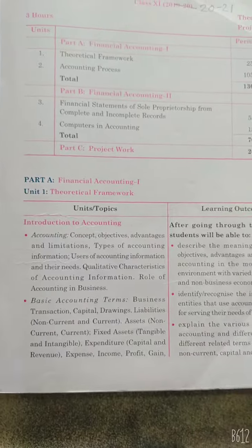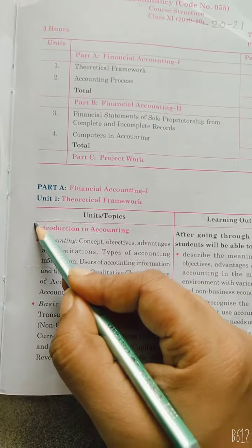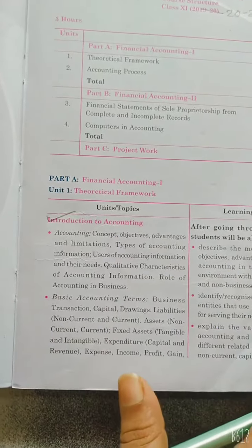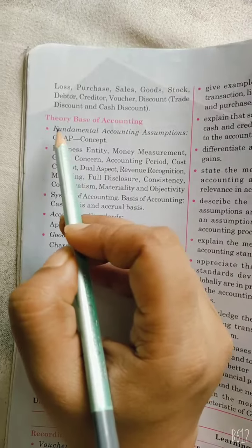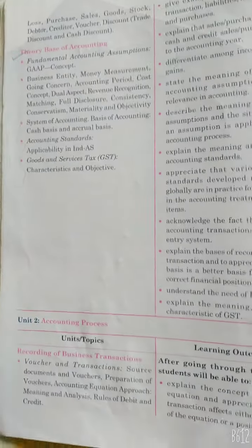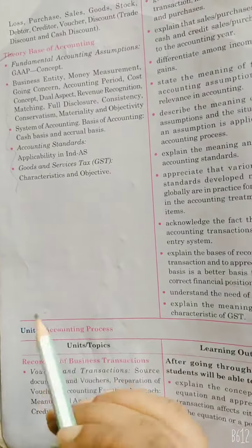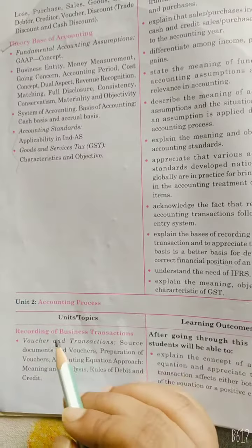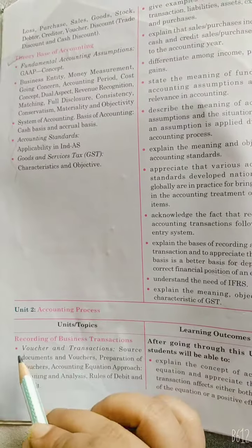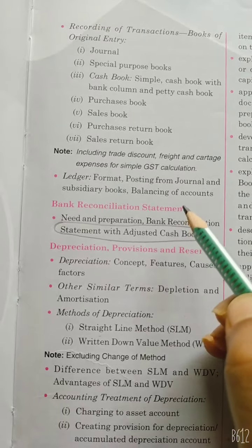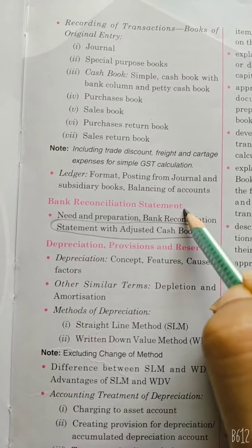In the first unit, Introduction to Accounting, there is no change. Then the second chapter, Theory of Accounting — no change. Then in the second unit, Recording of Business Transactions — no change.